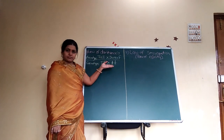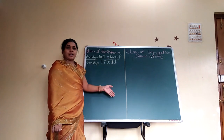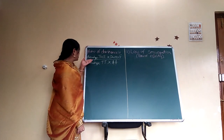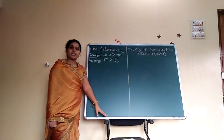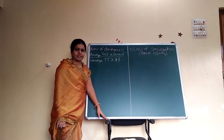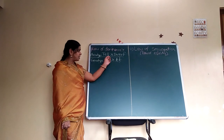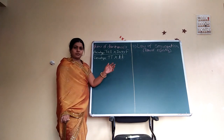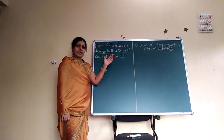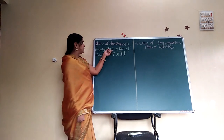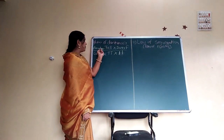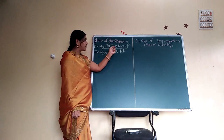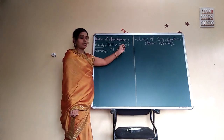To explain the law of dominance, the monohybrid cross is used. The monohybrid cross involves a single contrasting character — two pairs of traits, that is tall and dwarf, which indicate the height of the plant. The phenotype characters are pure tall and pure dwarf.